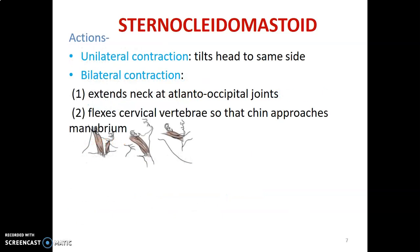The actions of sternocleidomastoid: if one side acts, it tilts the head to the same side — so the right sternocleidomastoid tilts the head to the right. When both right and left contract, you extend the neck at the atlanto-occipital joint, turning your head backwards as if looking up. When both act together, you also flex the vertebral column, bringing your chin toward the manubrium of the sternum.